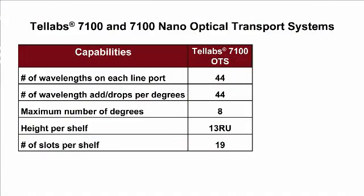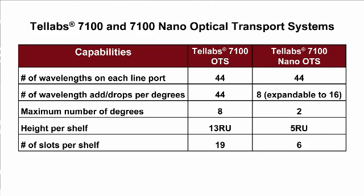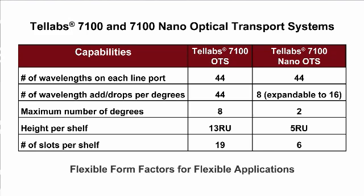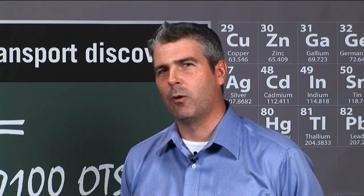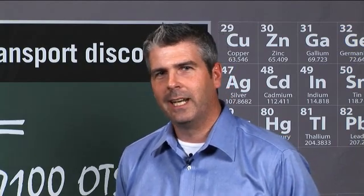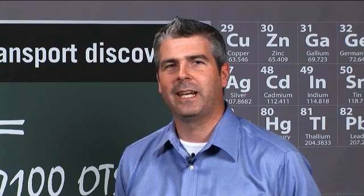Key prerequisites for moving out into the edge of the network with ROADM technology, or addressing smaller networks, is size, cost, and power. The 7100 Nano addresses all three of those in a big way. It has the ability to carry 44 wavelengths at 10 gigabits per second, identical to the current multi-degree ROADM product. It's part of the same family and interoperates in the network seamlessly at the optical level. The Nano can add or drop eight protected wavelengths at a network element today, in what the industry calls colorless add-drop — meaning I can software-program each individual wavelength I want to add and drop, and at a later date reconfigure that from the network operations center through software, without making any physical connections.